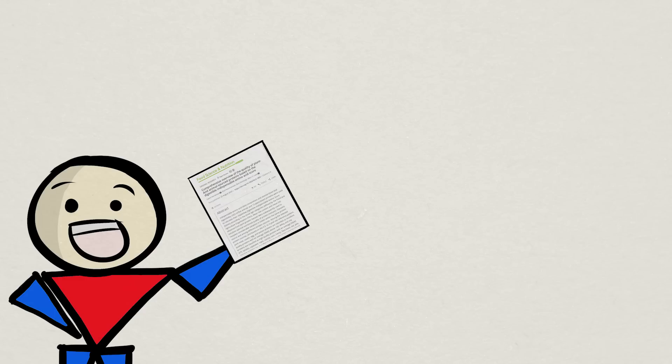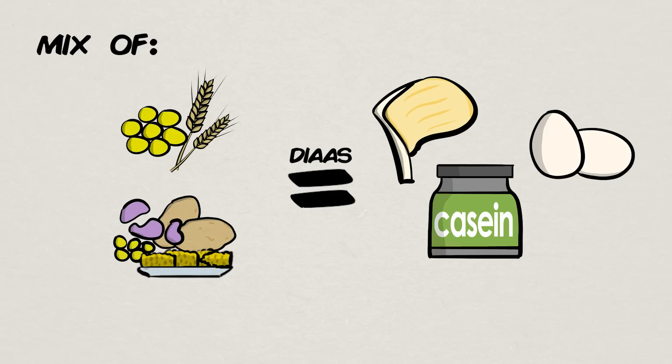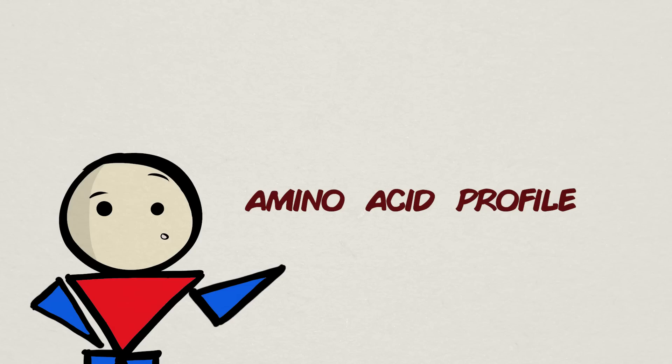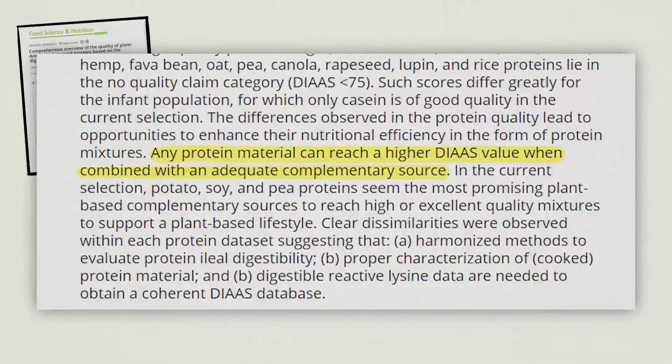Well, a 2020 overview by Harriman and colleagues did just that. And what they found was that a mixture of plant proteins like soy and wheat or beans, corn, and potatoes have DIAAS scores that were able to rival that of the excellent quality animal proteins. Their amino acid profiles drastically improved with these different combinations, which subsequently led to the researchers concluding that any protein material can reach a higher DIAAS value when combined with an adequate complementary source.